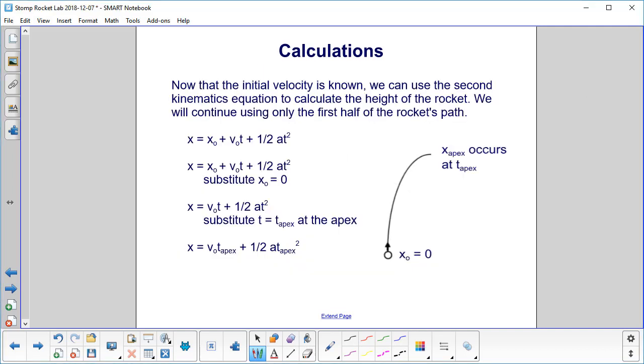We now have the initial velocity. And we will move on to the second kinematics equation. We'll continue using only the first half here of the rocket's path because that's where you find your highest height anyway, right? The first half it goes up, then it comes down. And just to say it again, hopefully you're going straight up and straight down.